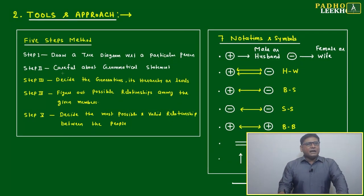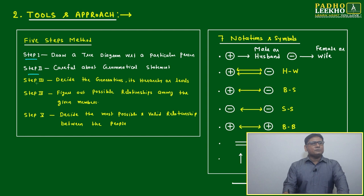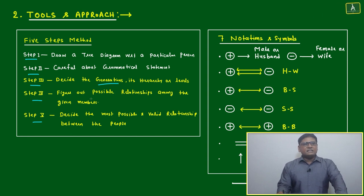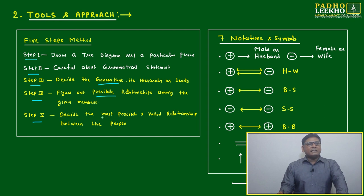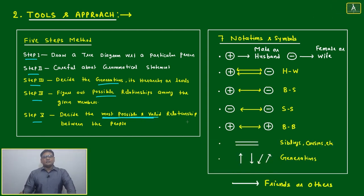These two things we have learned in session one. I kept them here for understanding or reference purposes. Five-step method: Step 1, draw a tree diagram carefully; Step 2, understand the grammatical statement; Step 3, decide the generations; Step 4, figure out possible relationships among given members; Step 5, decide the most possible and valid relationship. Relations should be valid also.